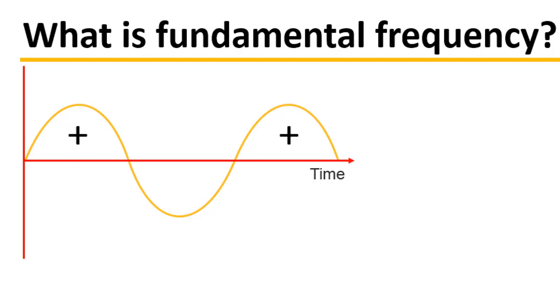These are the positive half cycles of the waveform and this one is the negative half cycle of the waveform. From positive half cycle to the negative half cycle, the waveform completes one cycle.